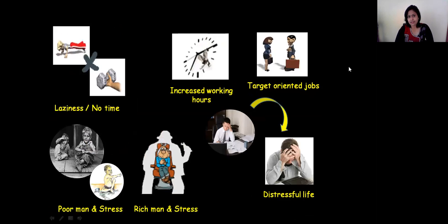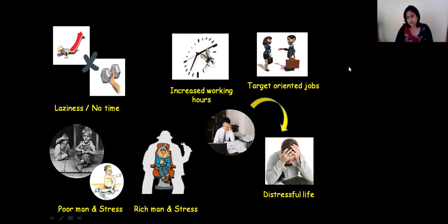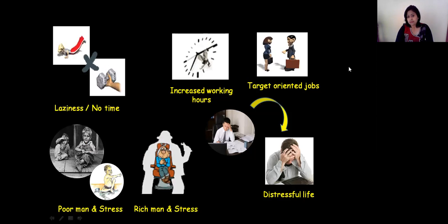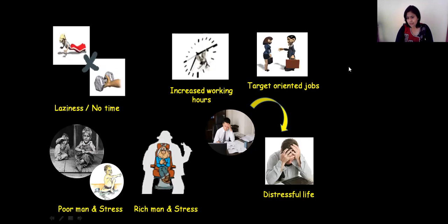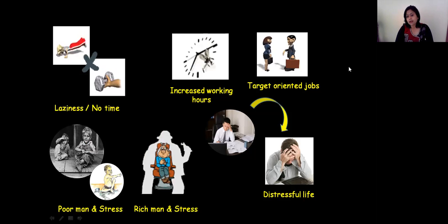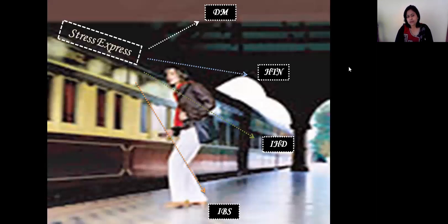If we talk about the young generation, they either due to laziness or lack of time don't pay enough attention to exercise and remain physically inactive. Increased working hours and target-oriented jobs have made the young generation very distressful. The poor person is stressed to move life on, and even wealthy persons are not free from the catch of stress because they are stressed to maintain money and position. So life in today's era is like a passenger on a train named Stress Express, which may drop him at any station like diabetes mellitus, hypertension, ischemic heart disease, or IBS.